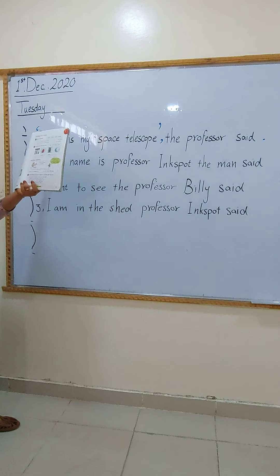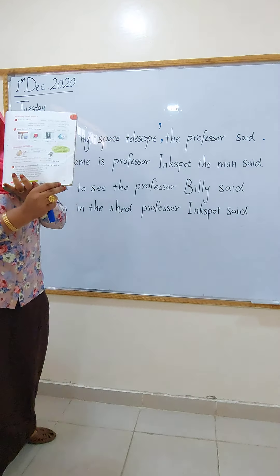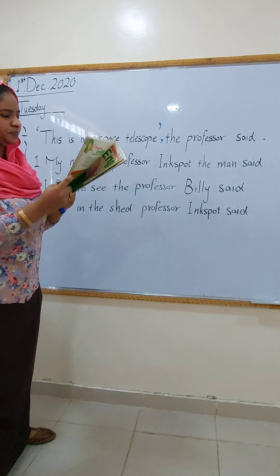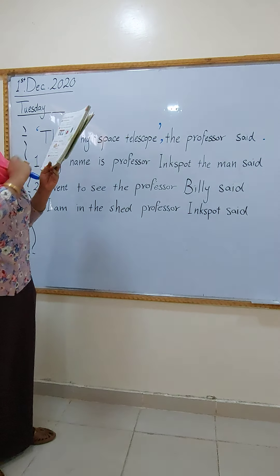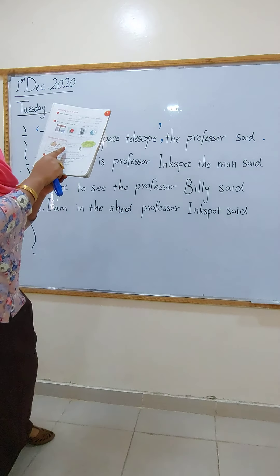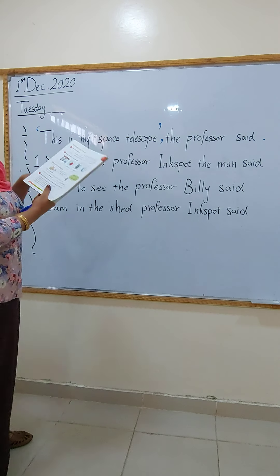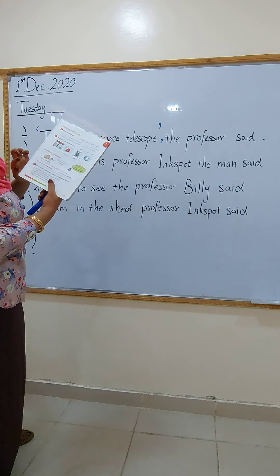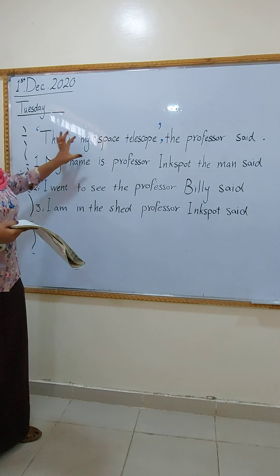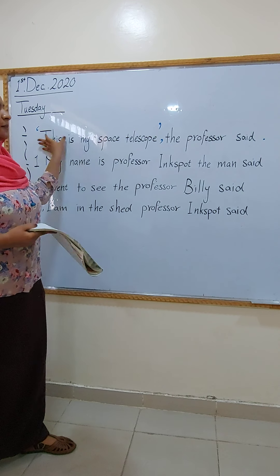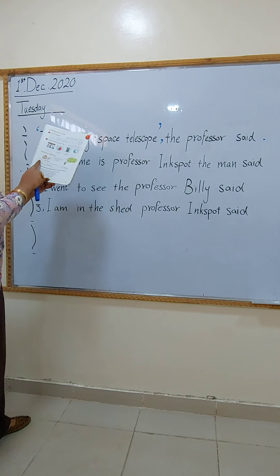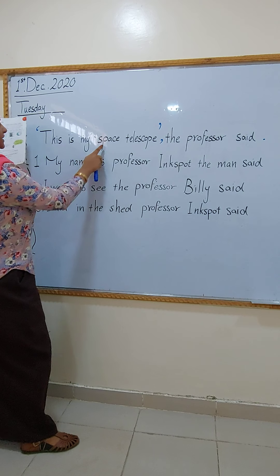Open your language book, page 13. Here we have Moby and the professor. The professor said, 'This is my space telescope.' When I want to say what the professor said, I put it between these two quotation marks and end it with a full stop. Now, I put it between these quotation marks and end it with a full stop: 'This is my space telescope.'